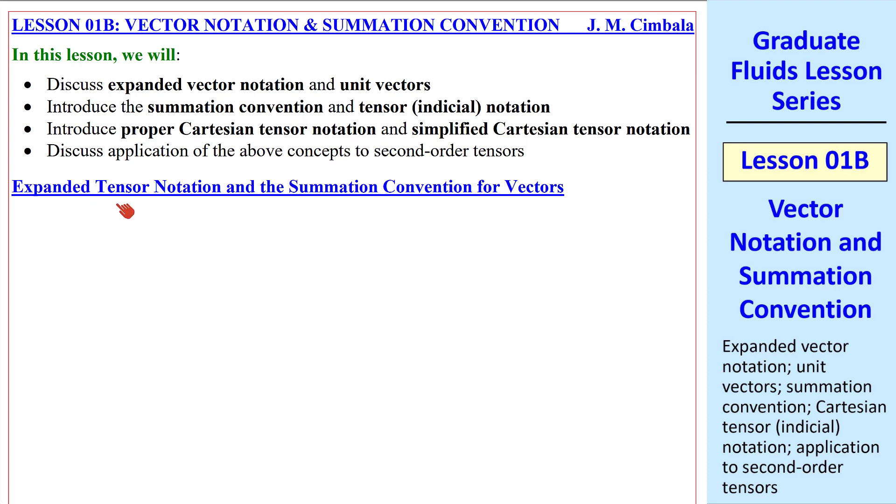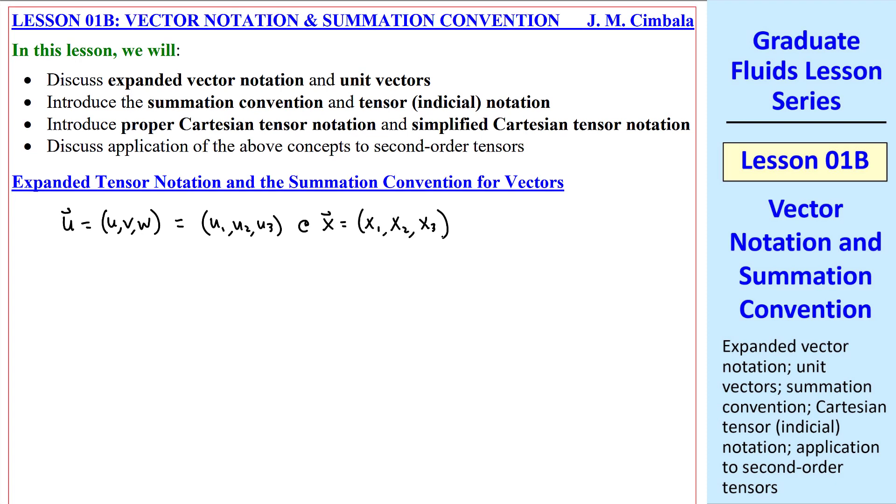First, let's consider these for vectors. The velocity vector, for example, we're used to writing as u, v, w. But as I said in the previous lesson, we'll get used to writing this as u1, u2, u3, which we define at some x location, x1, x2, x3. Formally, we expand it in vector notation by writing this: u vector is u1 i, where i is the unit vector in the x direction, plus u2 j, plus u3 k.